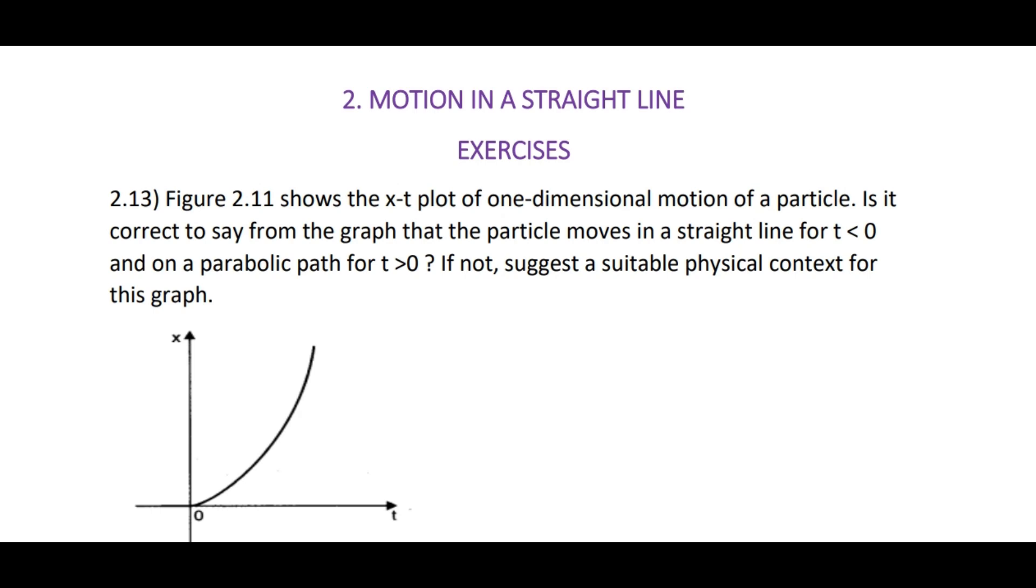Hello students, in this video we are going to discuss problems 2.13 and 2.14. Figure 2.11 shows the x-t plot of one-dimensional motion of a particle. Is it correct to say from the graph that the particle moves in a straight line for t less than 0 and on a parabolic path for t greater than 0? If not, suggest a suitable physical context for this graph.